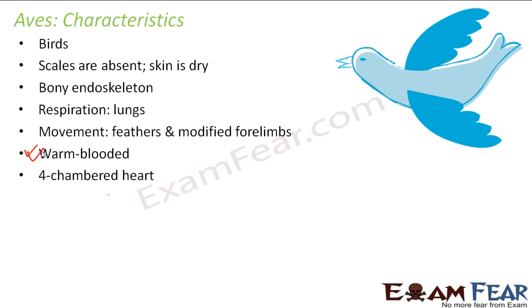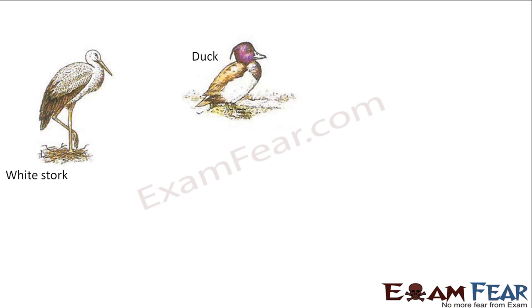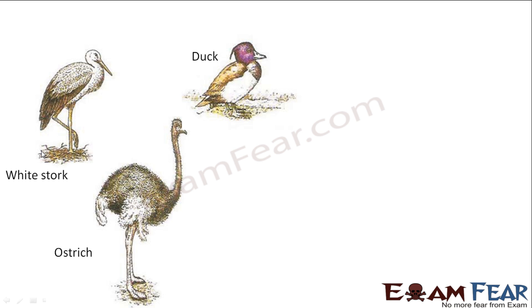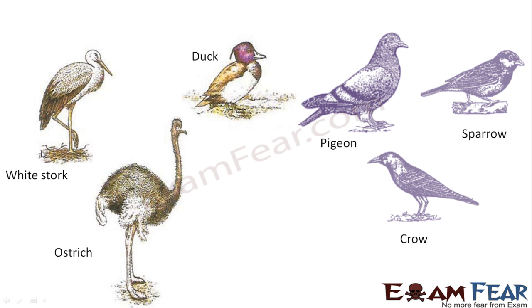Birds have a four-chambered heart with two auricles and two ventricles. Reproduction happens by laying eggs — they also do not give birth to their young ones directly. Most birds are capable of flying; however, there are a few exceptions, for example ostrich, which is not capable of flying.